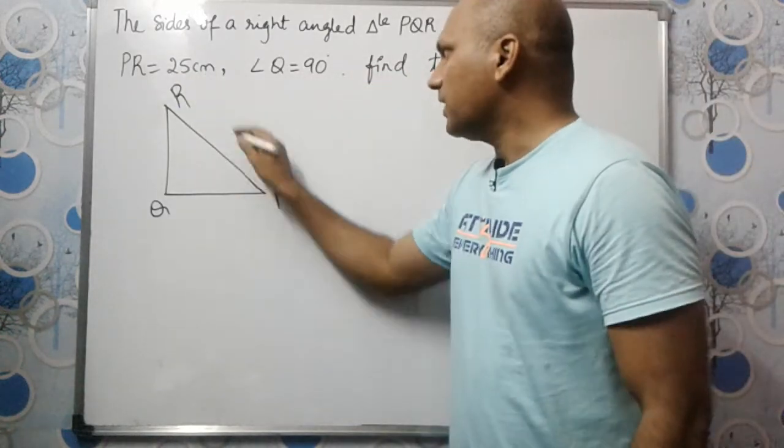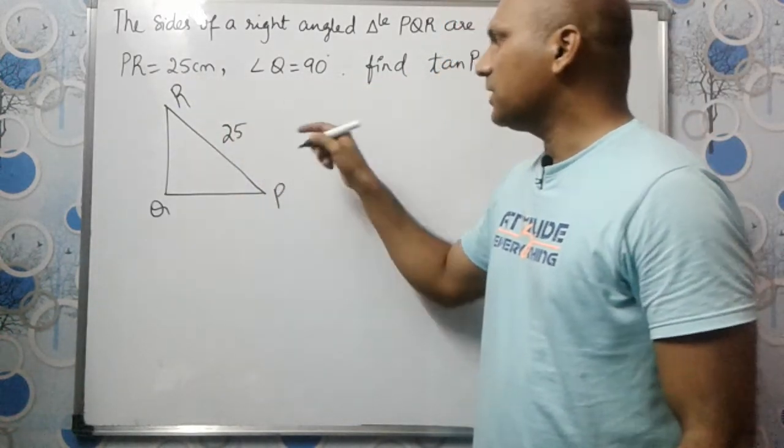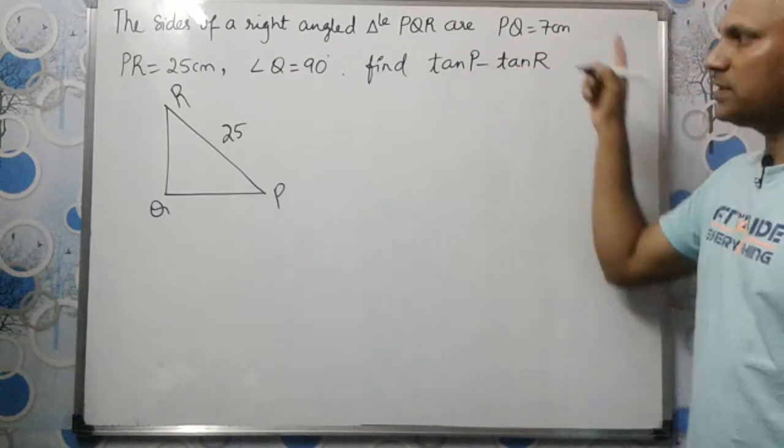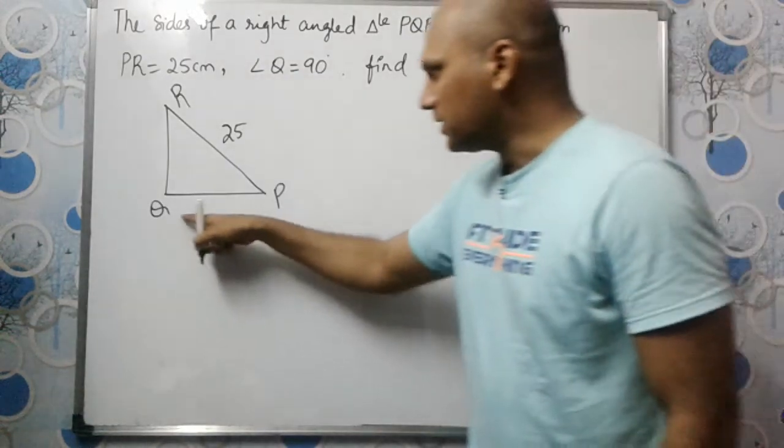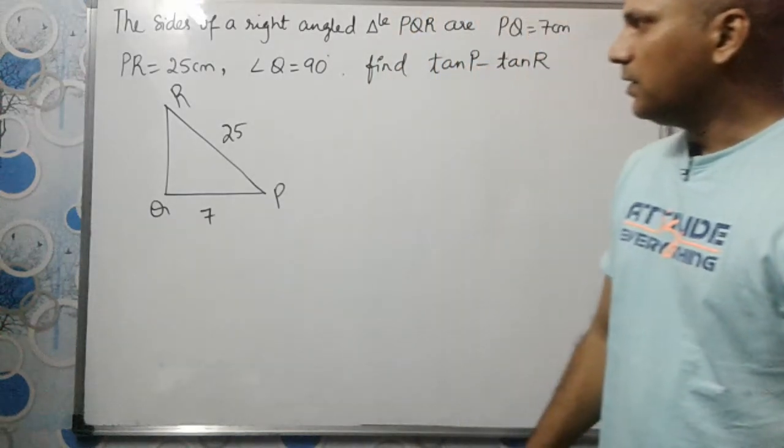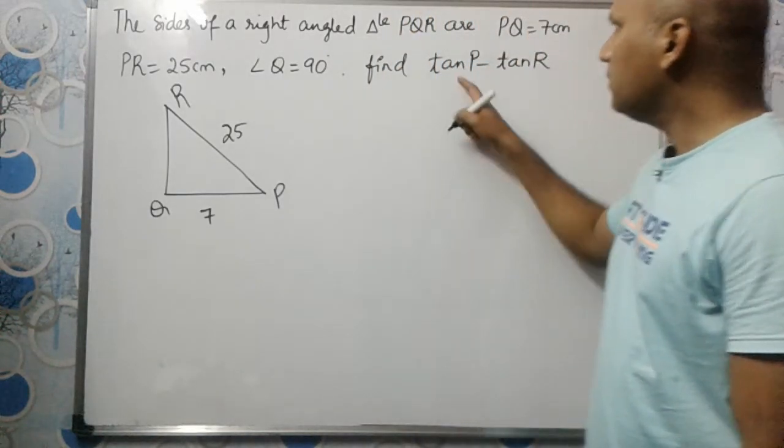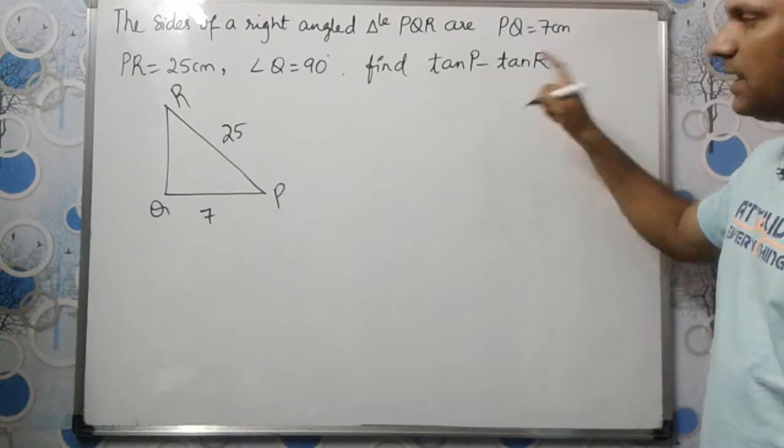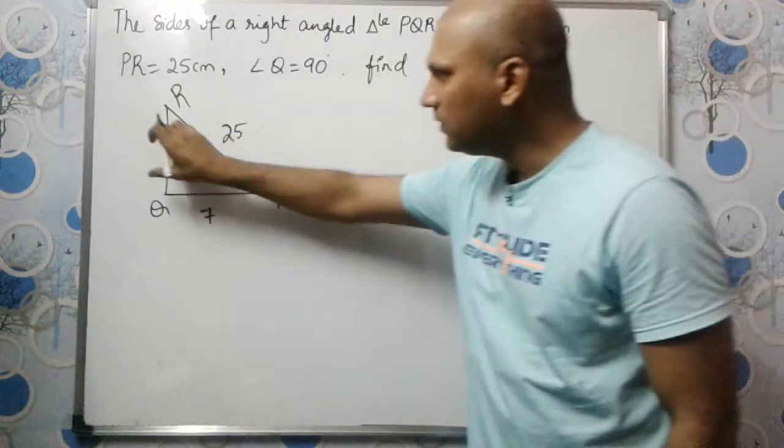PR is 25, which means hypotenuse is 25 centimeters, and PQ is 7, so this base PQ is 7. We need to find tan P minus tan R. We need to find the third side also.